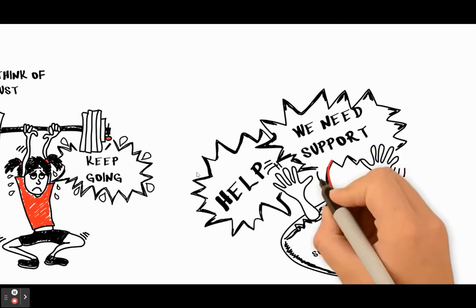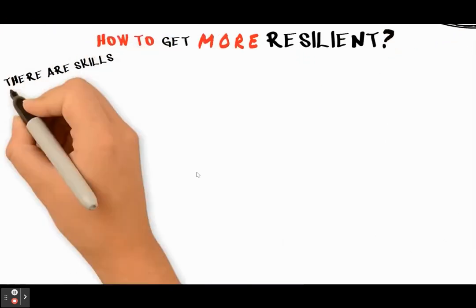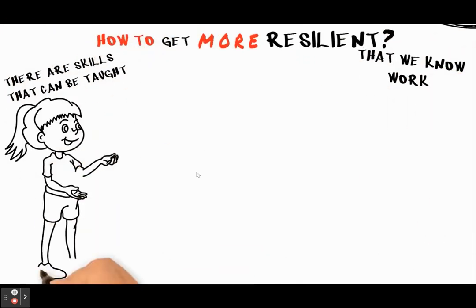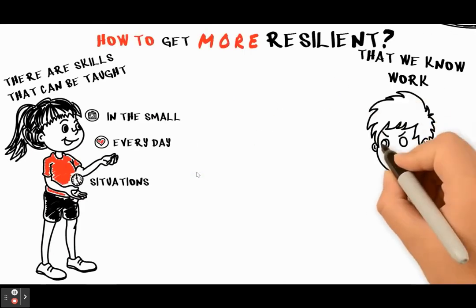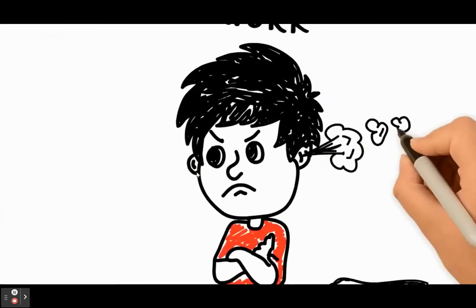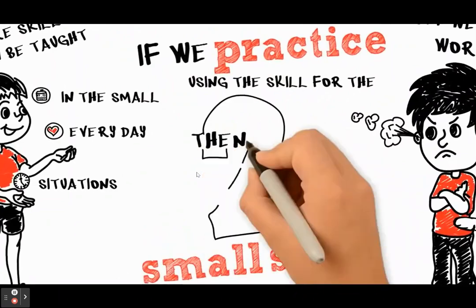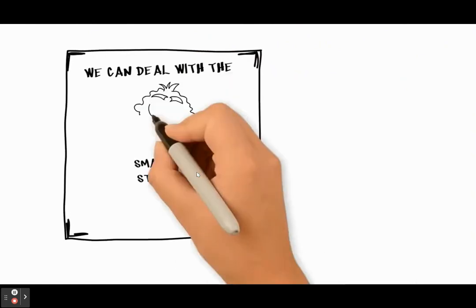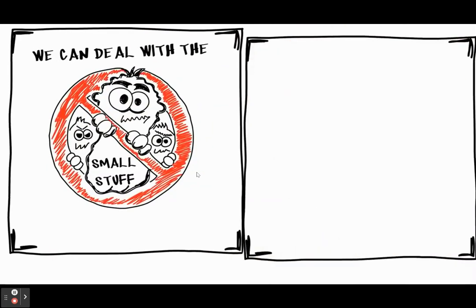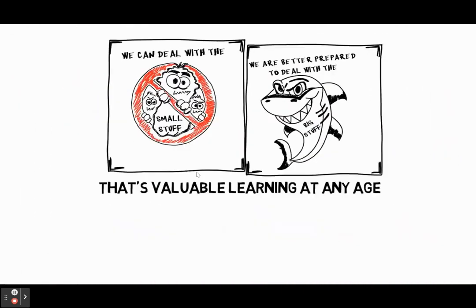Sometimes we forget that one, and it's very important. We can all get more resilient — the main question is how to. There are skills that can be taught that we know work. If we can learn and practise them in small, everyday situations — the type of things that poke you in the side or get you a little annoyed — then two amazing things happen: we can deal with the small stuff so it doesn't build up, and we are better prepared to deal with the big stuff. That's valuable learning at any age.